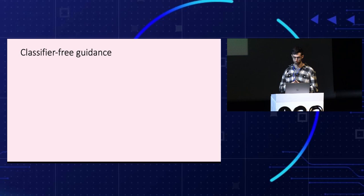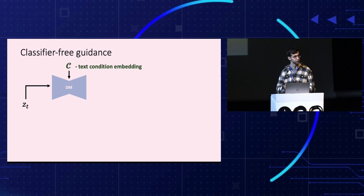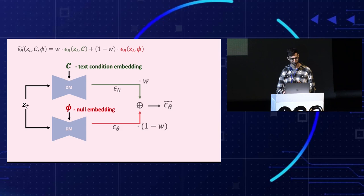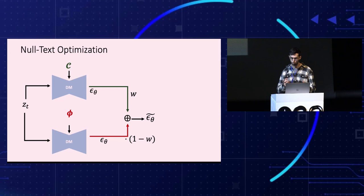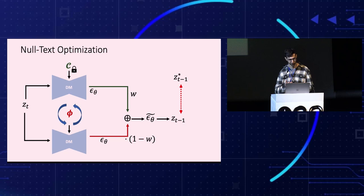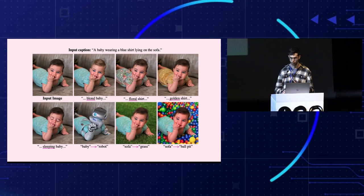While all prior works concentrate on tuning the model or the conditional text, we recognize the substantial effect induced by the unconditional part. And therefore, we only optimize the embedding used in the unconditional prediction, replacing the null text embedding. We use the objective of getting closer to the pivot. This results in high fidelity to both the original image and the target text, without any tuning to the model or the text embedding.